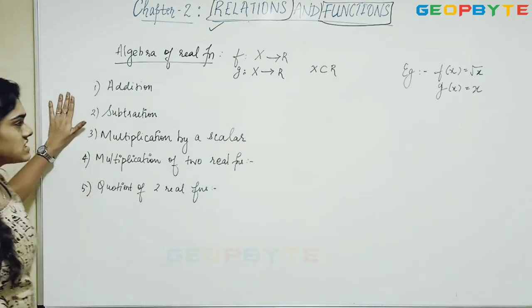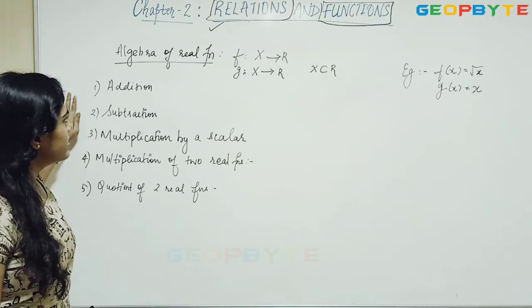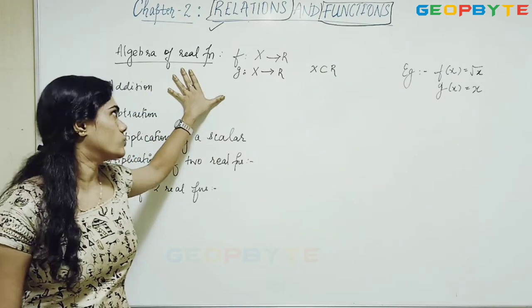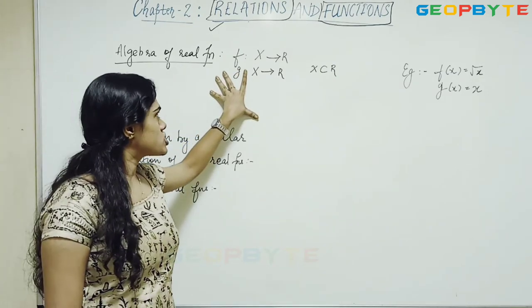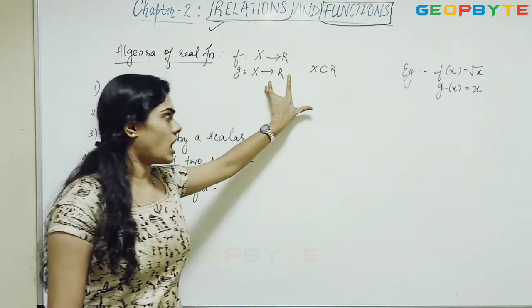That is, as we have the natural numbers like multiplication, addition, subtraction, we have the same things in the real functions also. So, if f is a function which is defined by x which is having a relationship r and g similarly with r,